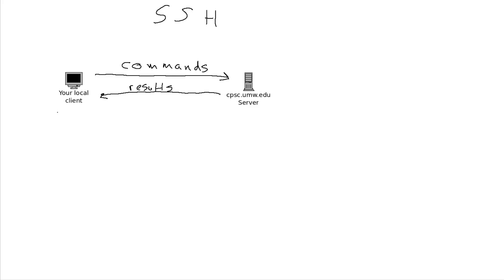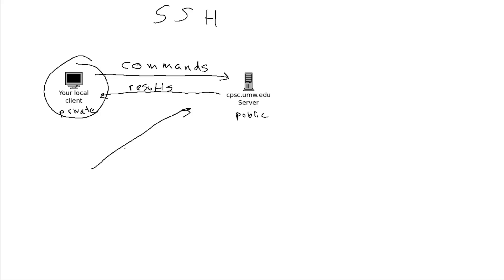One thing to note about SSH keys is that they only work between one pair of machines. The way it works is you'll have a private key set up on your own computer and a public key set up on the cpsc.umw.edu server, and that allows you to connect from that machine without typing your password. If you connect with a different machine — for instance, if you go to the computer lab on campus — it'll make you enter your password again. Importantly, you need to keep that private key on your local computer safe and not accidentally share it with somebody, because otherwise they'd be able to log onto the server with your name. So if you do set up the key pair, make sure you keep the private key safe.